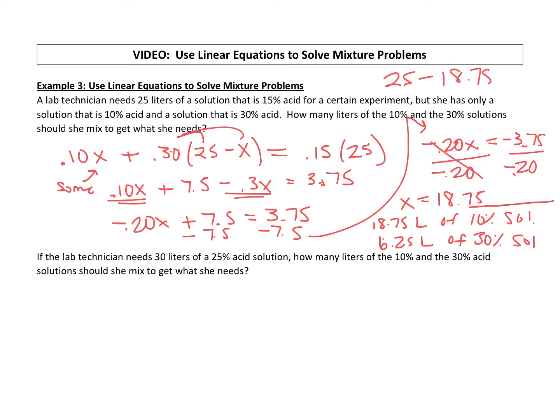So if she uses that combination, she's going to end up with a 15% solution and she'll have 25 liters of it.